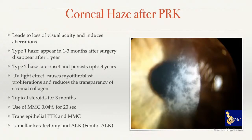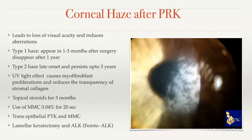There are two types of haze. Type 1 starts early — before three months — and disappears within a year. Type 2 starts late and can take up to three years to disappear. Haze is aggravated by UV light, which is prevalent in this region, causing myofibroblast proliferation. Topical steroids should be used for three months, and mitomycin C 0.02% or 0.04% is advocated. For established haze, options include transepithelial PTK with mitomycin, or lamellar keratectomy or femtosecond ALK.